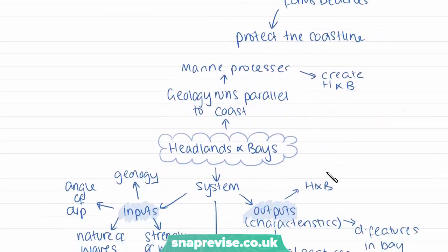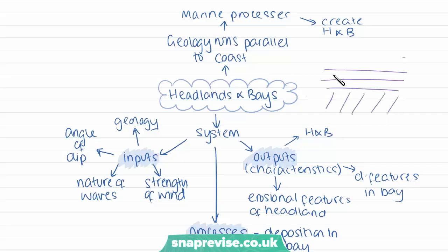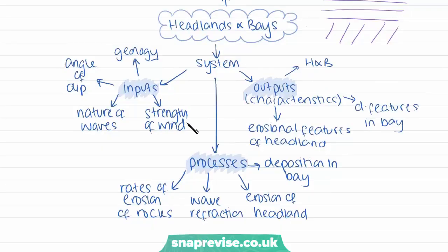Now we're going to look at the formation of headlands and bays in more detail. One of the characteristics needed for the formation of headlands and bays is geology that's running parallel to the coast. As we saw on the map, all the rock is lying parallel to the coast in horizontal strata. It's marine processes that are creating our headlands and bays. Coastal systems can be looked at with a systems approach, looking at the inputs, processes, and outputs. The inputs into our system for the formation of headlands and bays include the geology — the type of rock, with softer or harder rocks which are more or less resistant to erosion.